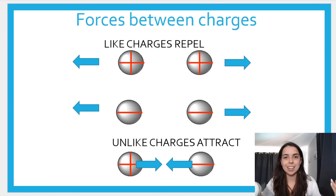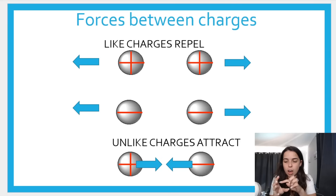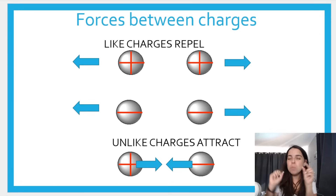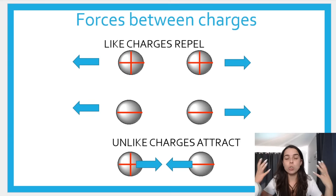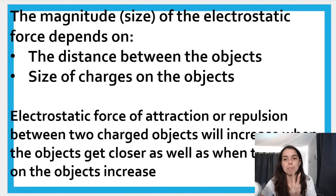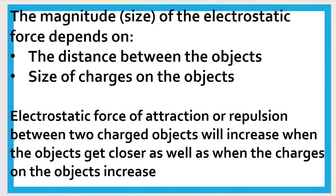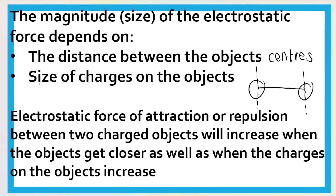The distance between their centers — how far their centers are apart — determines the force. The bigger the distance, the smaller the force; the smaller the distance, the bigger the force. The other thing that can affect the electrostatic force is the size of the charges. If they have a bigger charge, their force is stronger. So there are two things that impact the magnitude of the electrostatic force: the distance between the centers of the objects, and the size of the charged objects. And that is basically Coulomb's Law.